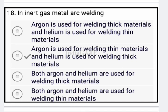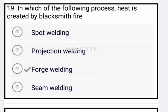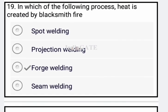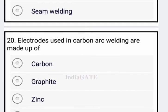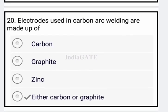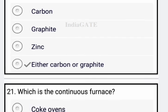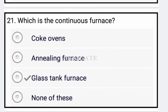Next question: in which of the following processes is heat created by a blacksmith fire? The correct answer is forge welding — option C is your correct answer. Carbon arc welding electrodes are made of either carbon or graphite. Next: which of the following is a continuous furnace? The glass tank furnace is your continuous furnace — option C is your correct answer.